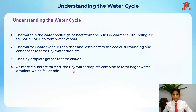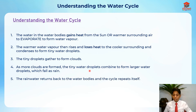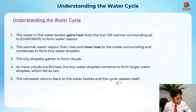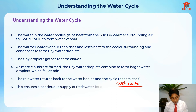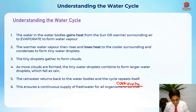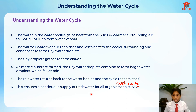The rainwater returns back to the water bodies and the cycle repeats itself — this is the continuity part. This ensures a continuous supply of fresh water for all organisms to survive. Now let's move on.